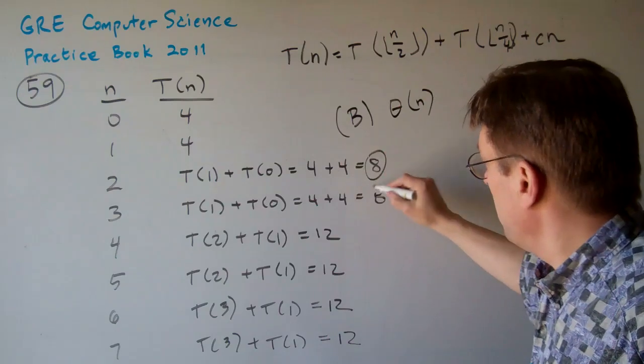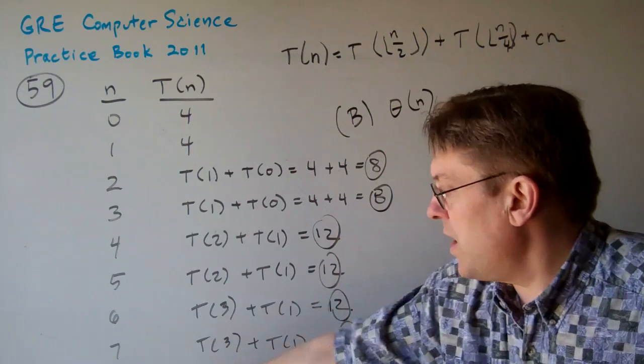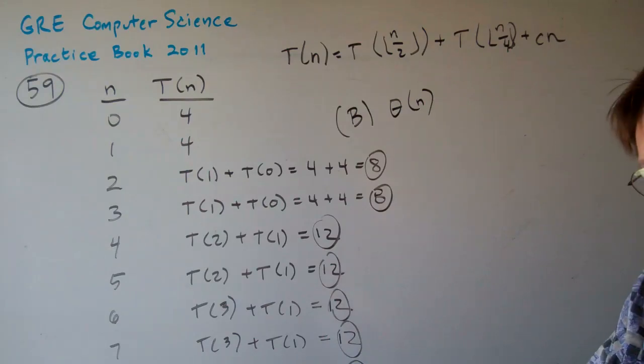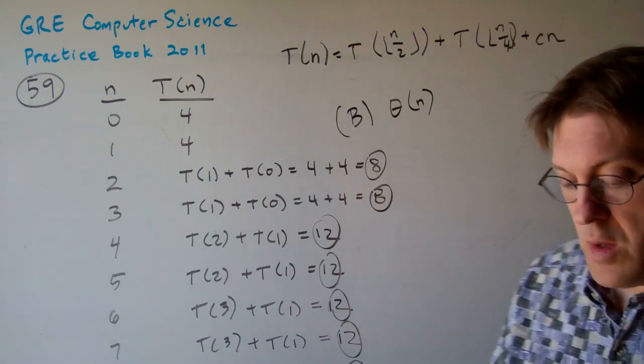And I did that just by computing out all these numbers and seeing what's n and what's T of n. It isn't fancy, and I'm sure there's a more rigorous mathematical way of doing this, but in the test, it gets you to the right answer. So, hopefully that's helpful.